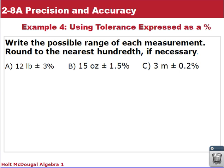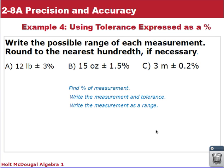And our last example is using tolerance expressed as a percent. So we want to write the possible range of measurement for these. So looking at these, the steps involved are to find the percent of the measurement, write the measurement and tolerance, and then write the measurement as a range.